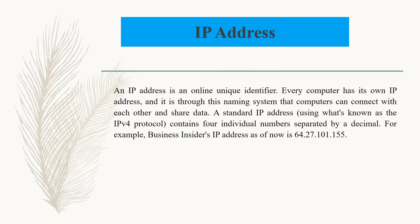An IP address is a unique online identifier. Every computer has its own IP address, and it is through this naming system that computers can connect with each other and share data. A standard IP address contains four individual numbers separated by a dot. For example, Business Insider's IP address is 64.27.101.155. If you want to check the IP address of google.com, facebook.com, youtube.com, udemy.com, skillshare.com, or your university's website, you can do that — it's easy. I'll be showing you a practical example using the command prompt in a few lectures.